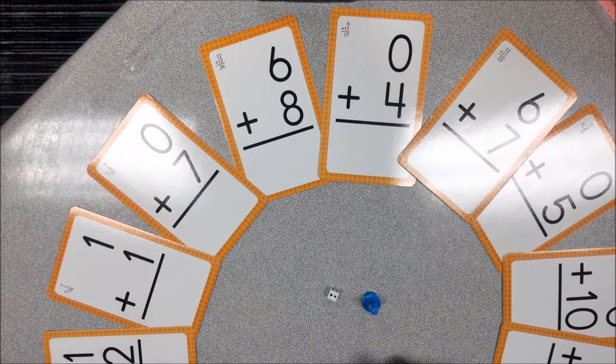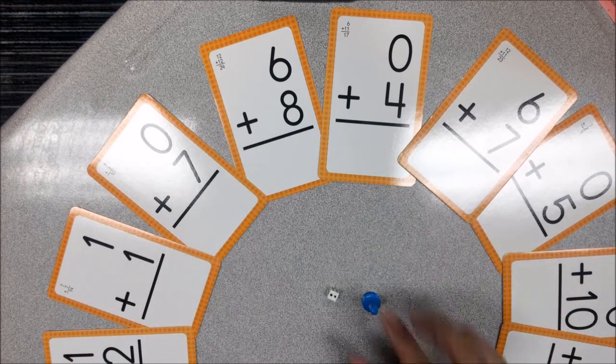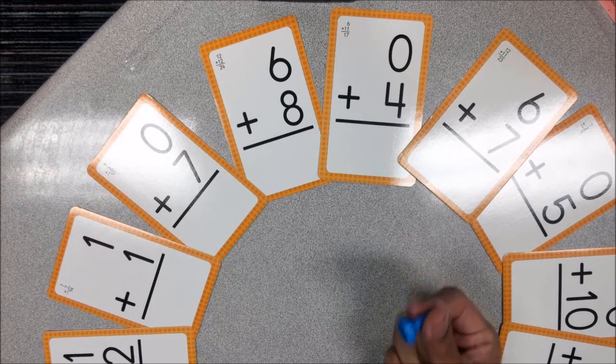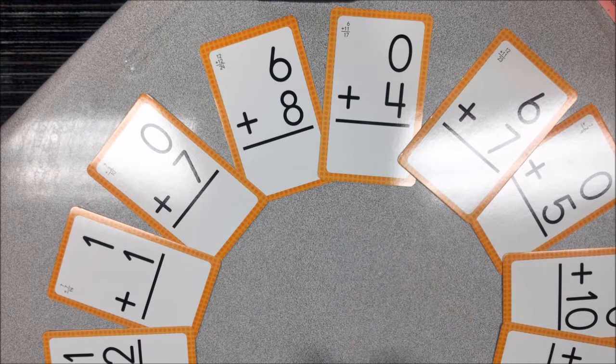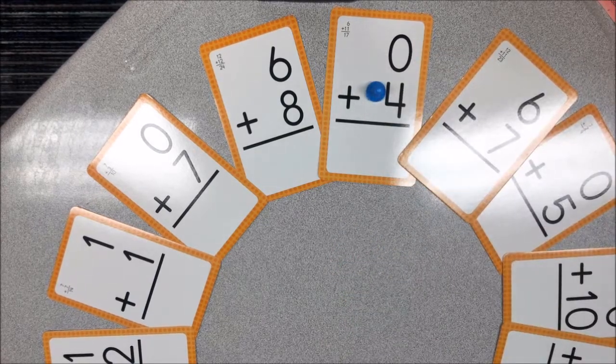This game is called Around We Go and you'll need to spread out your cards in a large circle. You'll need a die and each player will need their own token. So it could be a game piece from a game board, it can be a button, it can be a coin. Players will each pick a random place to start around the circle.